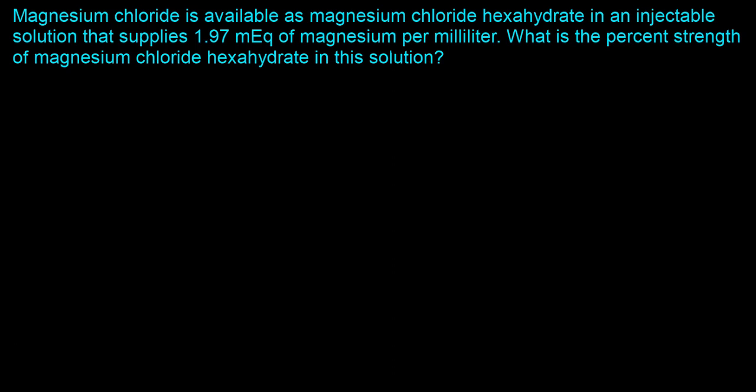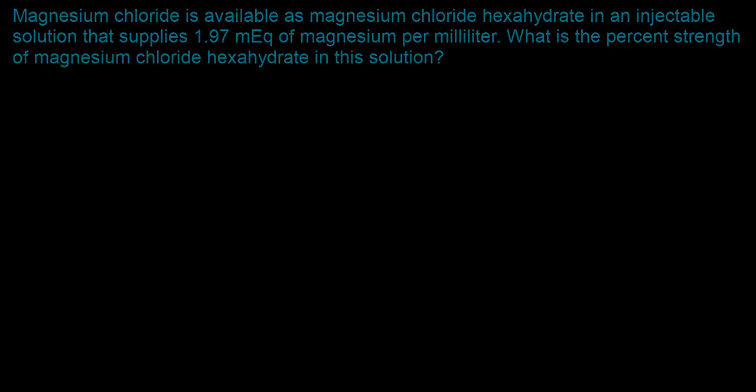Can you actually move from milliequivalents per milliliter to percentage strength? And if so, how exactly do you do that? That actually is the real question.